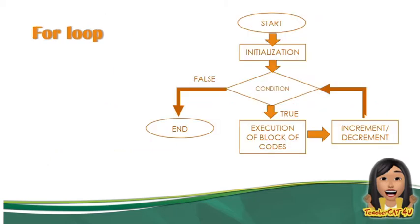Ito yung flowchart ng for loop. Kung makikita ninyo, mag-i-start siya sa initialization or yung starting point. Then, after nun, magkakaroon ng condition. If the condition is true, gagawin niya yung block of code. Then, mag-i-increment or decrement, iaas niya ulit sa condition. Kung mag-to-true ito, gagawin ulit yung block of code. Hanggang sa true yung condition, paulit-ulit lang siyang gagawin ang execution ng block of code. Pag once na nag-false, mag-e-end yung for loop statement natin.